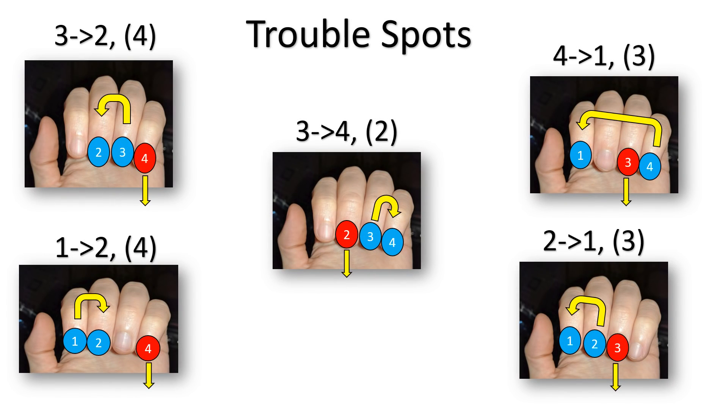Here is a troubleshooting checklist I made for the most difficult fingers to teach. As finger 3 moved to finger 2, I consciously lowered finger 4. As finger 3 moved to finger 4, I lowered finger 2, and so on.